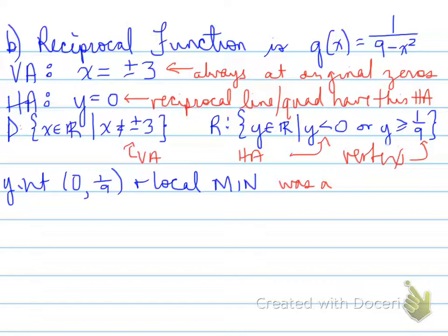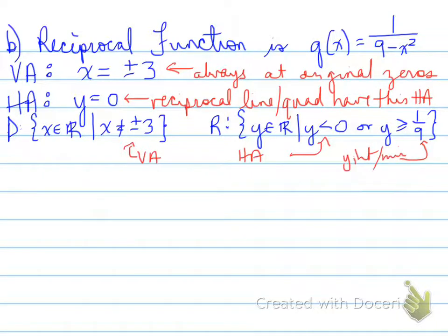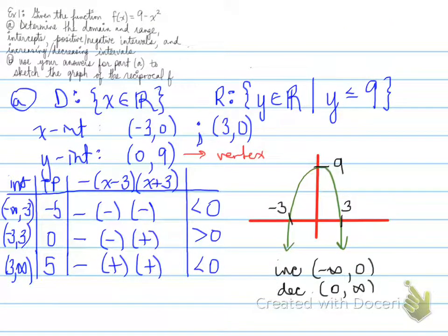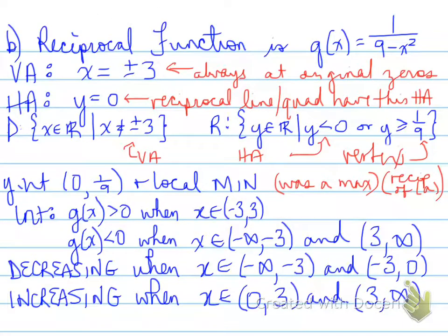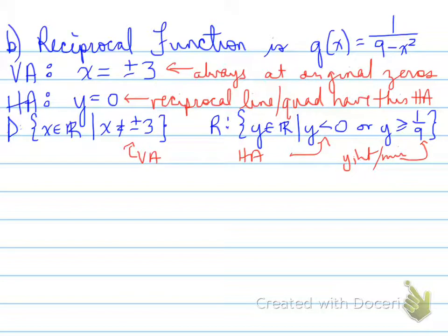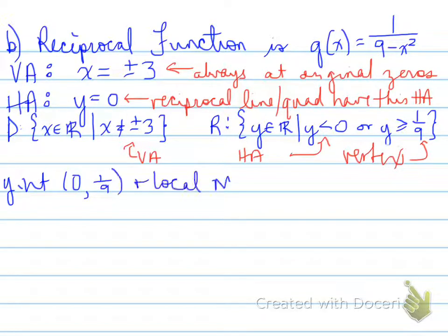Why is 1/9 a local minimum? In the original function, the y-intercept (0, 9) was a maximum. When you take the reciprocal, you flip that section of the graph. The 9 becomes 1 over 9 — a number very close to the horizontal asymptote. So the y-intercept of the reciprocal function is (0, 1/9), which is also our local minimum. This was a maximum in the original function; taking the reciprocal turns it into a minimum.